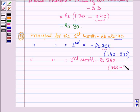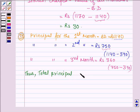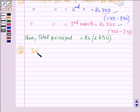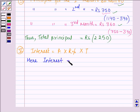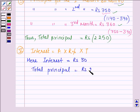Thus, we get the third principal by subtracting the installment from the second month's principal. Therefore, the total principal is equal to the sum of these three principals for the first, second, and third months, and this is equal to Rs. 2250.